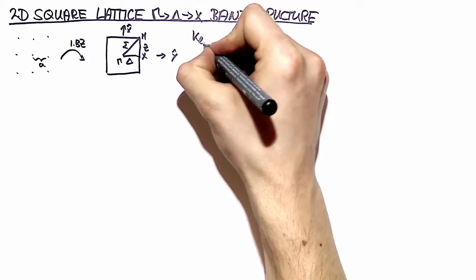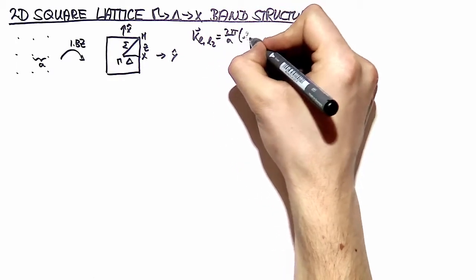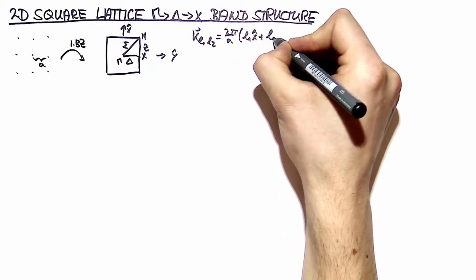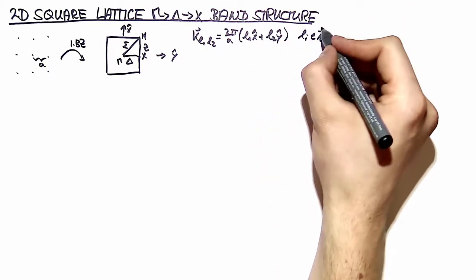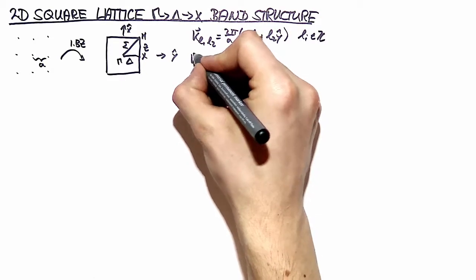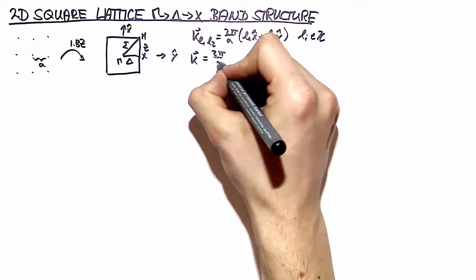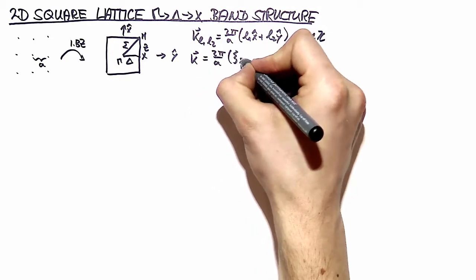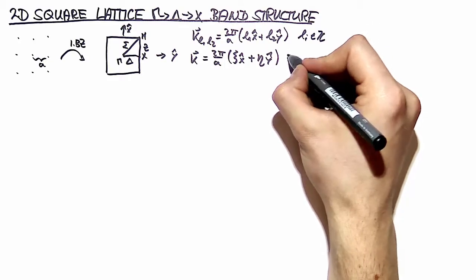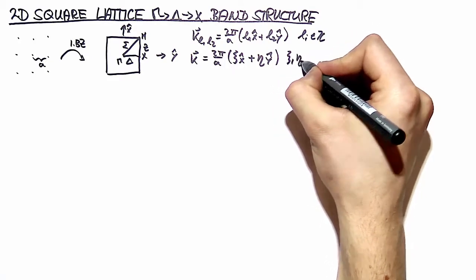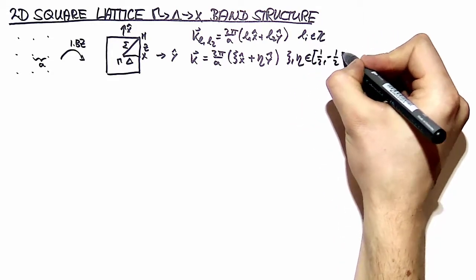For any reciprocal lattice vector k, this can be written as 2π/a, assigned with two indices l₁ and l₂ which lie in the integers. And for a vector k in the first Brillouin zone, any vector k can be written as a sum of the two basis vectors multiplied by parameters ζ and ν which lie in the interval −1/2 to 1/2.